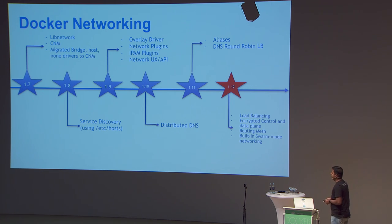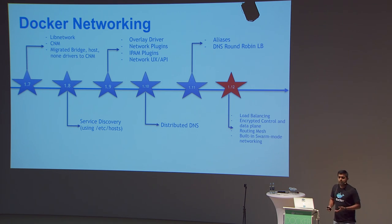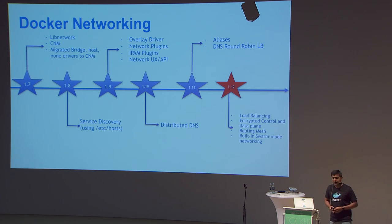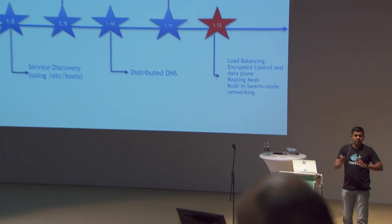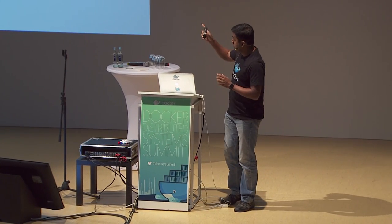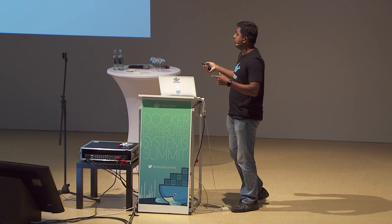When we started at 1.7, we didn't immediately implement networking or load balancing — we took it slow. We started implementing the actual framework required for a solid and extensible networking framework for Docker. We started with the libnetwork project, with CNM as our base model, and first migrated all the existing bridge, host, and non-host drivers. Note that drivers are important when it comes to the data plane, which we will cover in the deep dive.